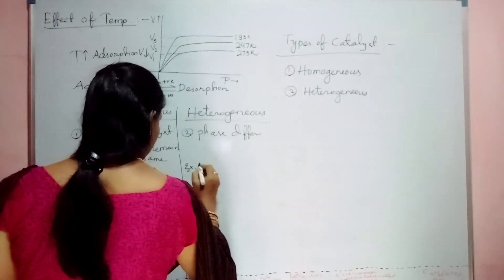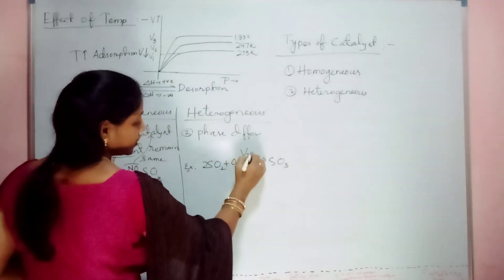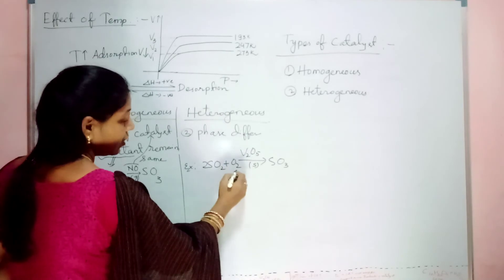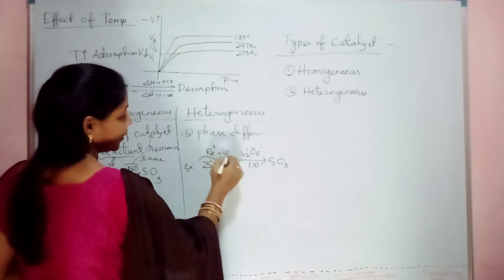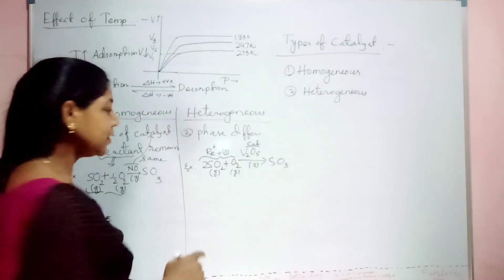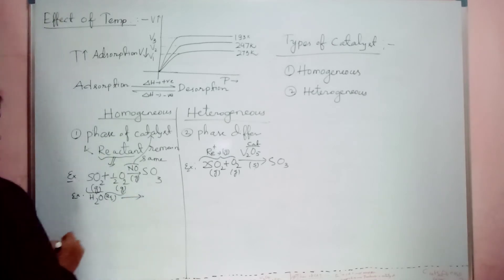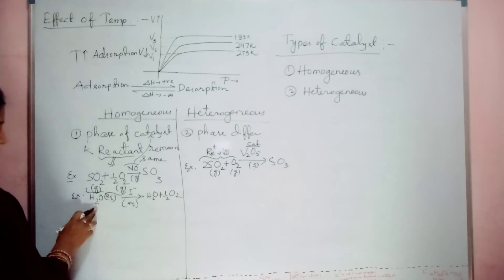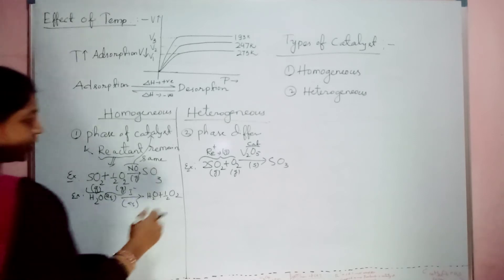Heterogeneous example: 2SO2 + O2 → 2SO3 using V2O5 (vanadium pentoxide) as catalyst. The reactants are in the gaseous phase whereas V2O5 is solid — so phase differs, hence heterogeneous. Another homogeneous example: H2O2 (aqueous) with I⁻ (aqueous) as catalyst → H2O + ½O2. Both reactant and catalyst are in aqueous phase — same phase, homogeneous.